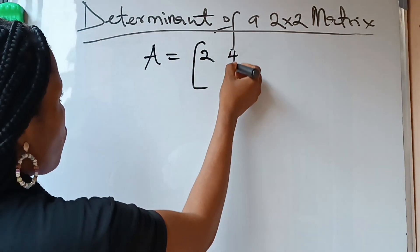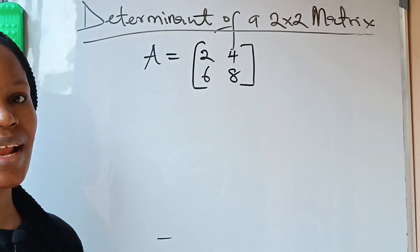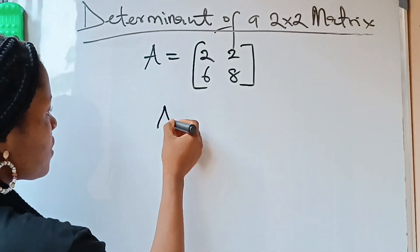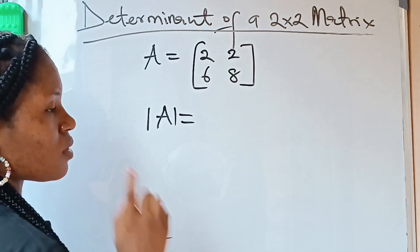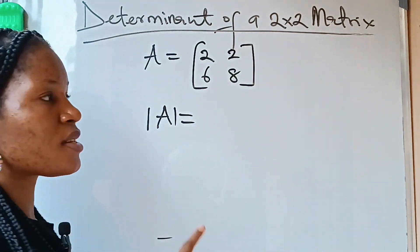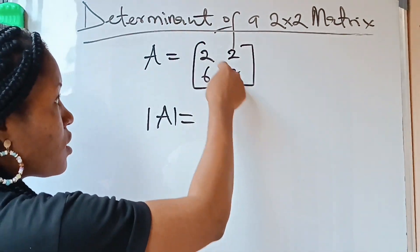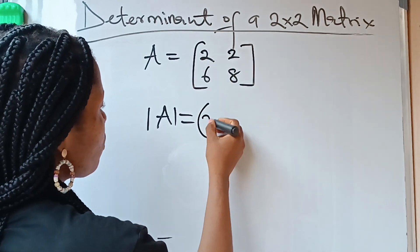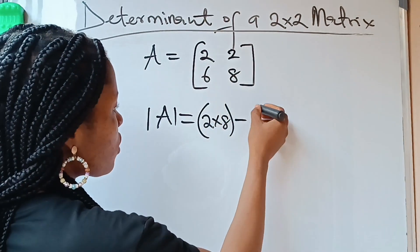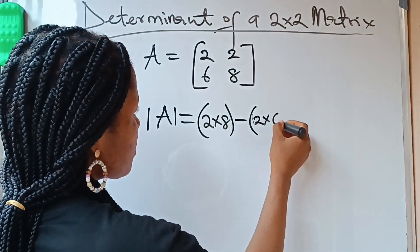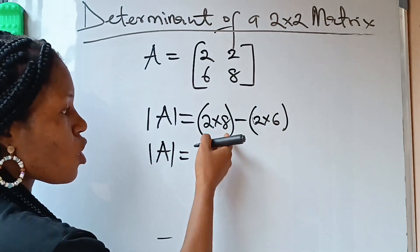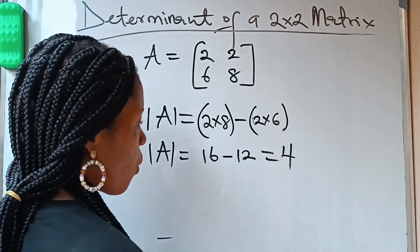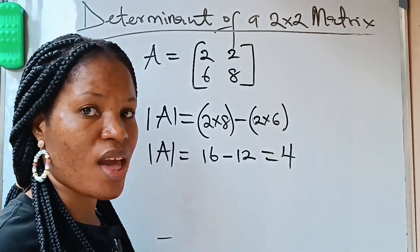For example, if A is equal to [2, 4; 6, 8]. The determinant of A — when you look at a 2 by 2 matrix, it has two diagonals. The leading diagonal is this one: 2 and 8. To get the determinant, you first multiply your leading diagonal — 2 times 8 — minus the other diagonal — 2 times 6. So you will have 2 times 8 is 16, minus 2 times 6 which is 12. Your result becomes 4. That is the determinant of A.